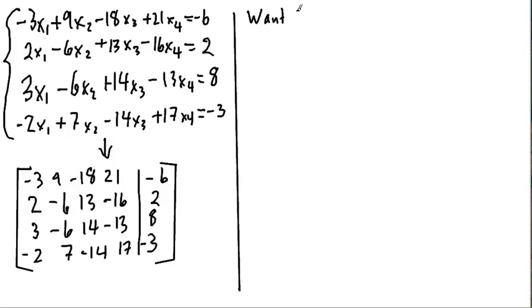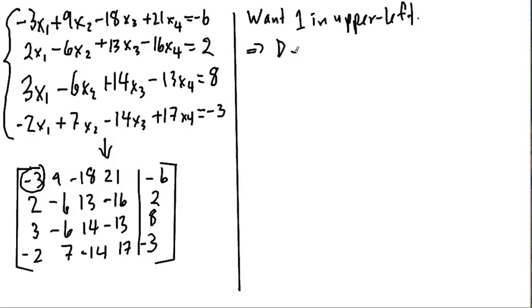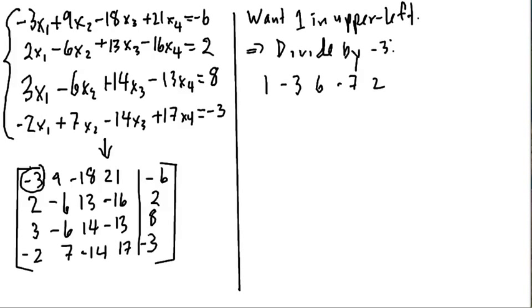The first thing we want is a one in the upper left corner. There are pretty much two ways of doing this: you can swap two rows, or you can divide by the first entry in the row. Here we don't have a one anywhere in the left column, so we're going to divide by the first number in the top row. I've set things up so that you can divide everything evenly by three, so we'll go ahead and do that.